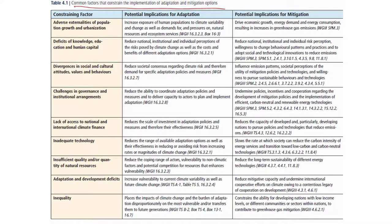These are the constraining factors which range from adverse externalities of population growth and urbanization. The term externality comes from economic and social science disciplines - it means something not directly related to the problem you are dealing with. For climate change adaptation, population growth and urbanization are externalities: more population means more people exposed to extreme climate events like floods and heat waves, and for mitigation it affects economic growth, energy demand, and energy consumption.